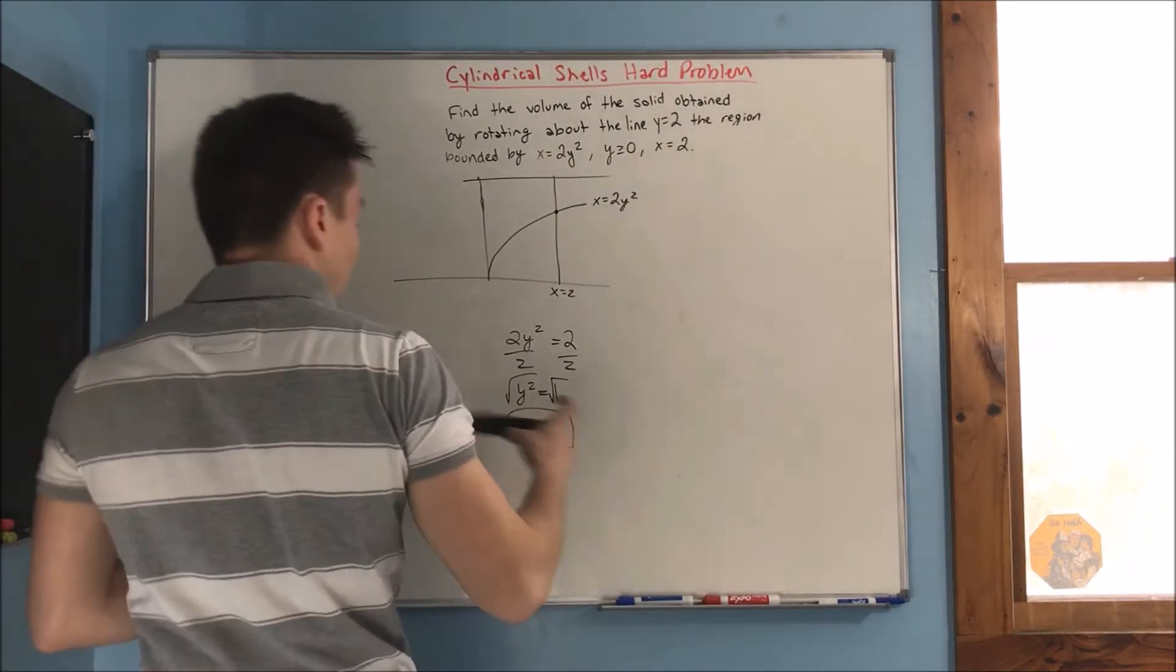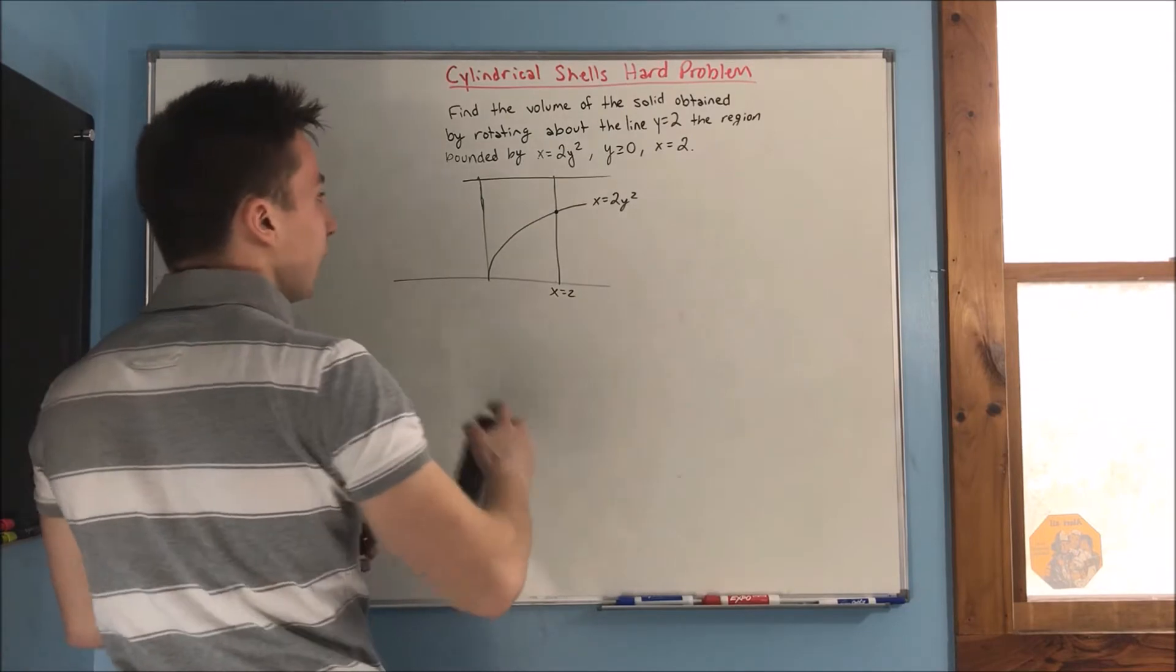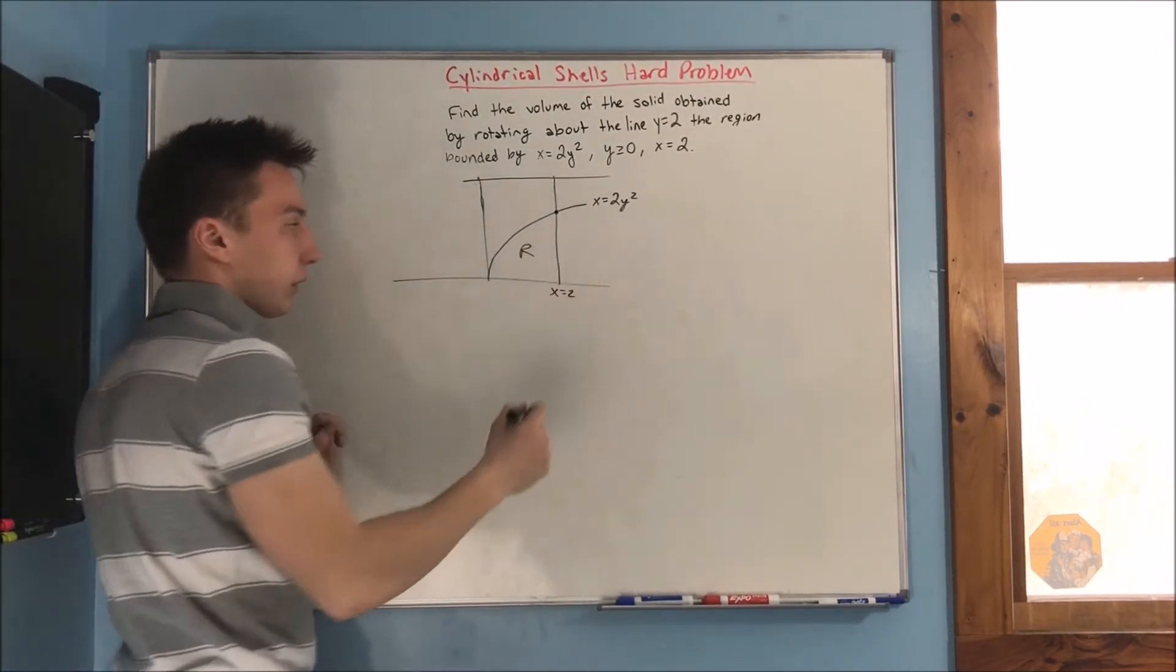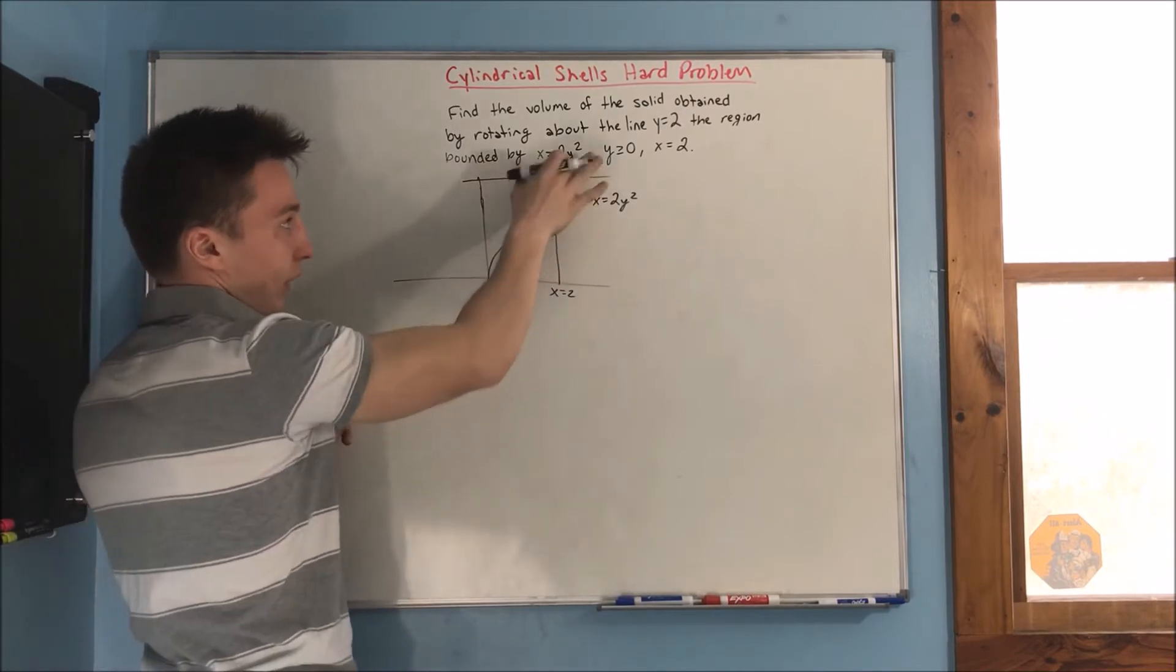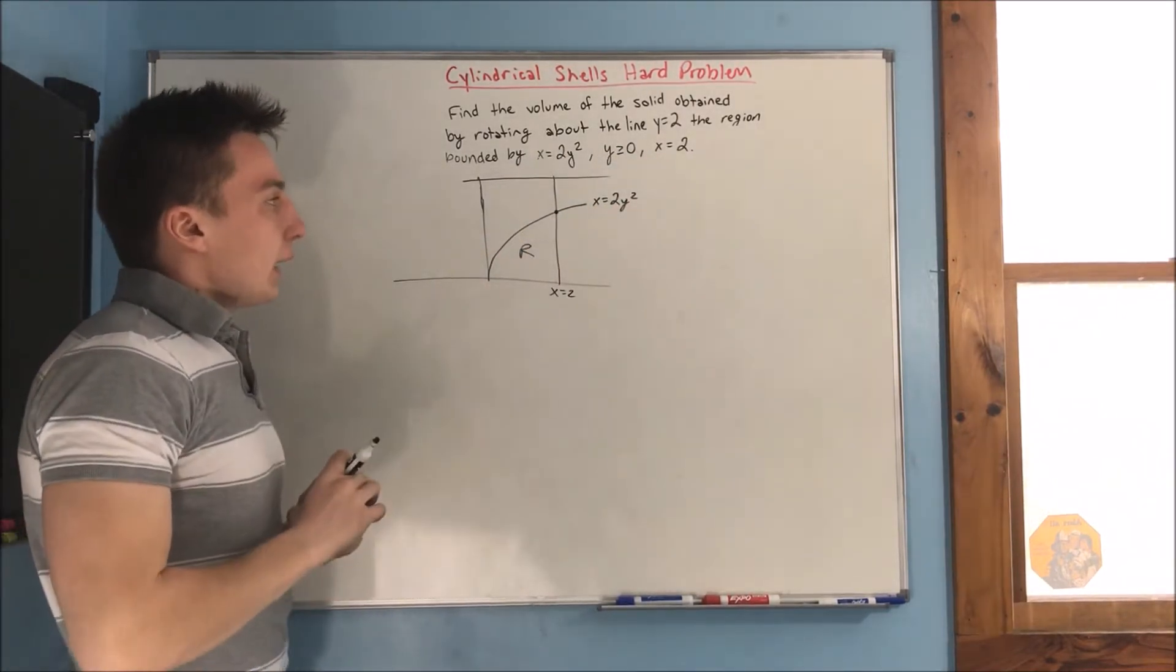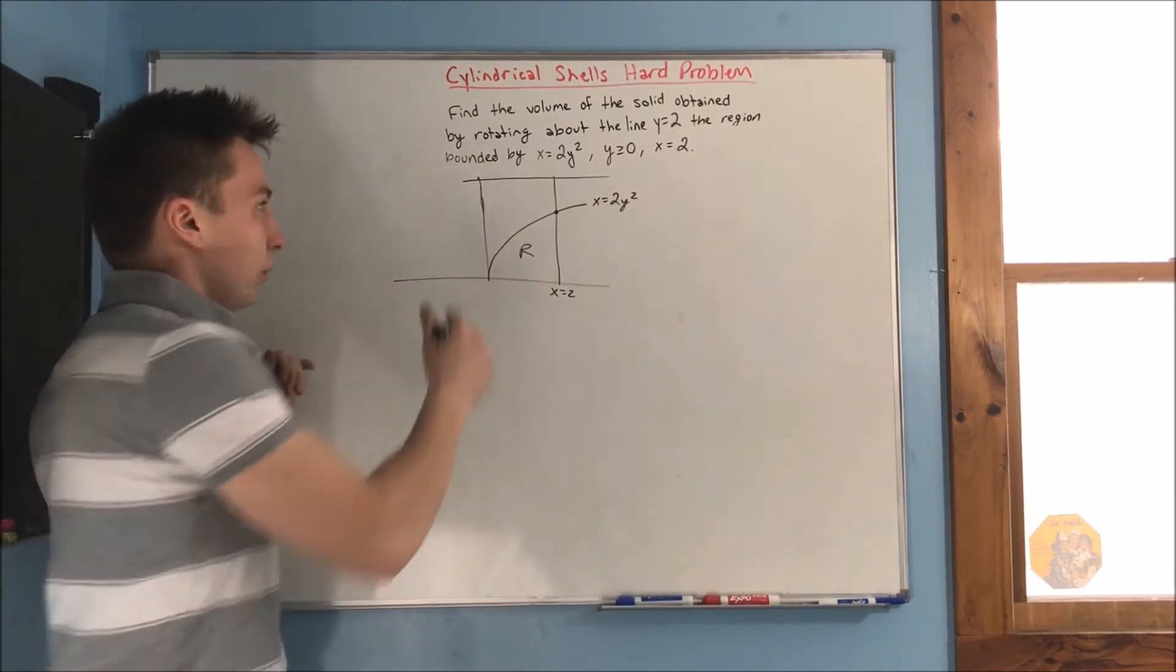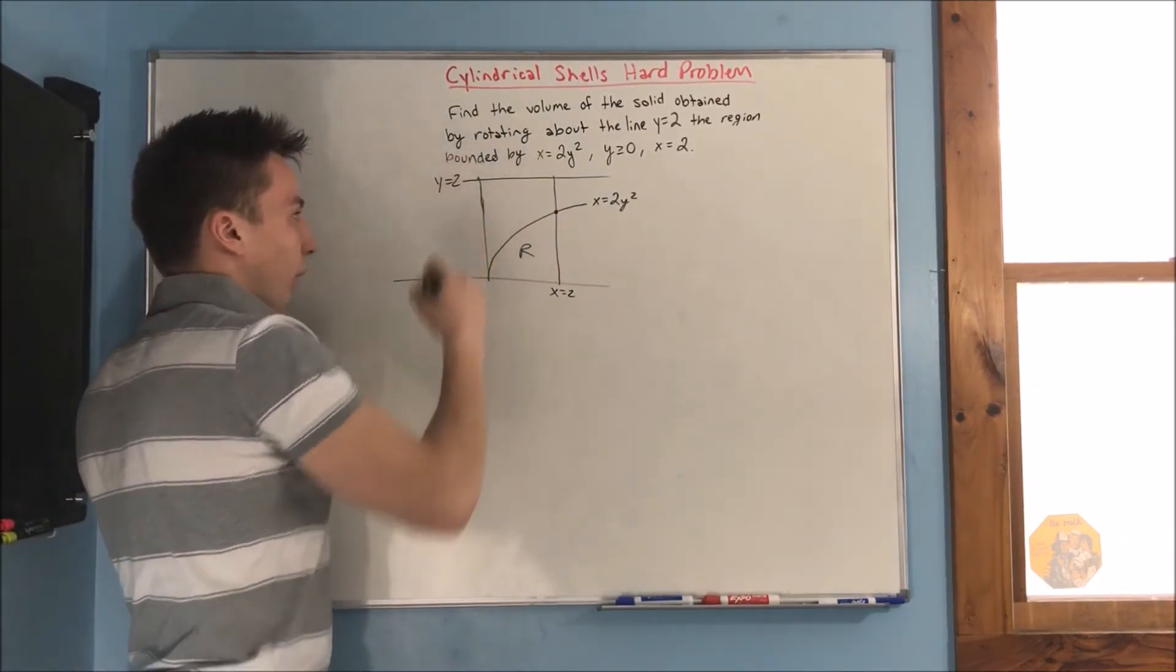So, now, what is our region? Okay? Well, our region is going to be this, right here, right? That's bounded by everything that you see here. And, now we have to rotate that region around y equals 2, which is, I'll label that right up here, y equals 2.